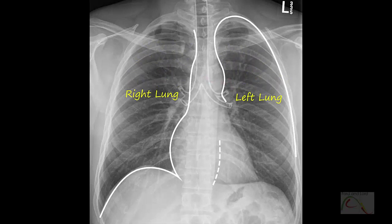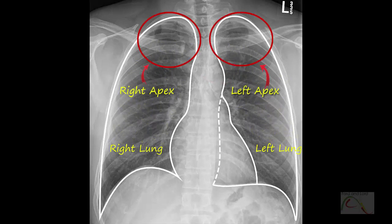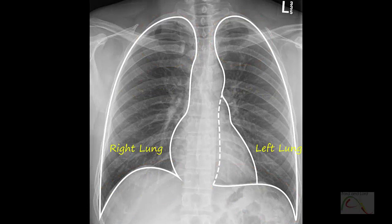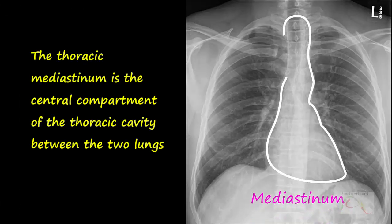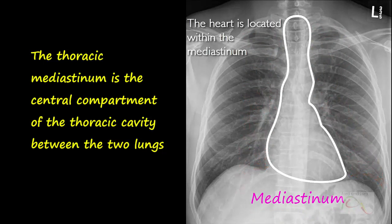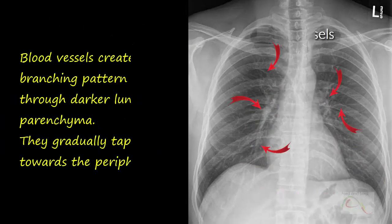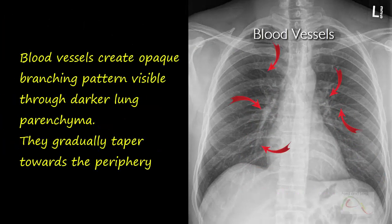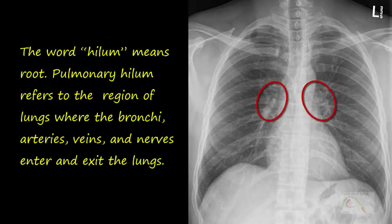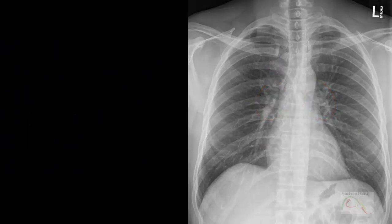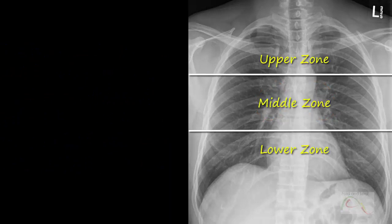The lungs are conical in shape. The upper part is rounded and is known as the apex. The lower concave part is the base, which resides above the diaphragm. The mediastinum is the central portion of the thoracic cavity containing the heart, aorta, major blood vessels, esophagus, trachea, and main bronchi. Normal lungs have a branching vascular pattern visible through them. The maximum diameter of the vessels is seen near the hilum, and they gradually taper as they branch, becoming almost invisible toward the periphery. The lungs are frequently divided into upper, middle, and lower zones by radiologists.